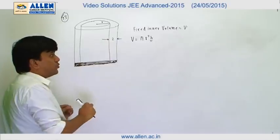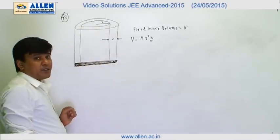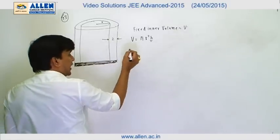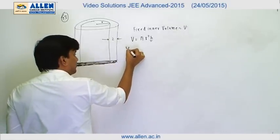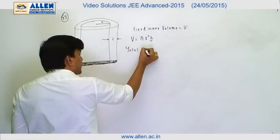Now we know if this thickness is 2, the radius of the outer wall is going to be r plus 2, and hence we can now calculate the total material involved in this construction.